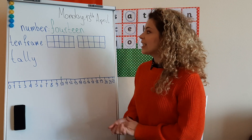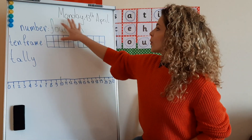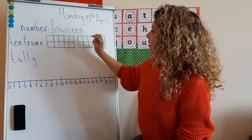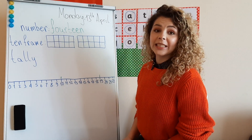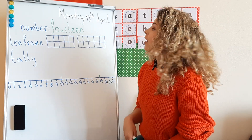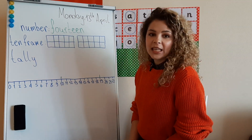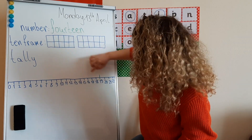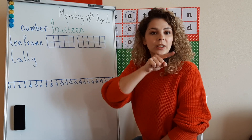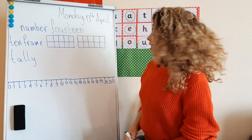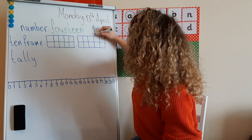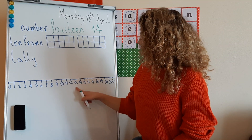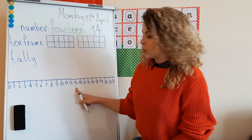Now look at my board. Today we're going to do a new number. I've already written down the word — it says F-O-U-R-T-E-E-N. The two E letters are written as a long sound E. The number is FOURTEEN — number 14. The number before 14 is number 13, which we learned last week. Tomorrow we're going to be doing number 15.